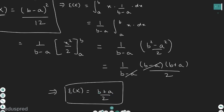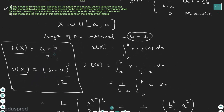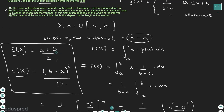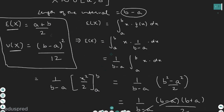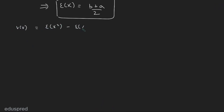This confirms the formula: expected value of X is a plus b divided by 2, which clearly does not depend on the length of the interval. Now let's derive the formula for the variance of X. Variance of X equals expected value of X squared minus the expected value of X whole squared. I already know E[X], but I first need to find the expected value of X squared.